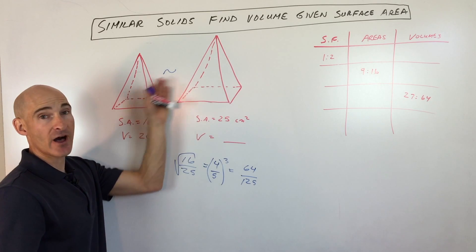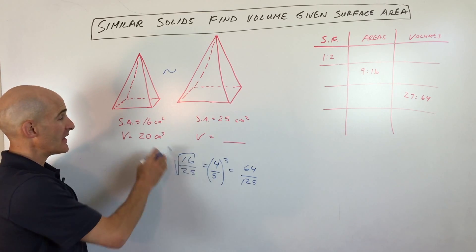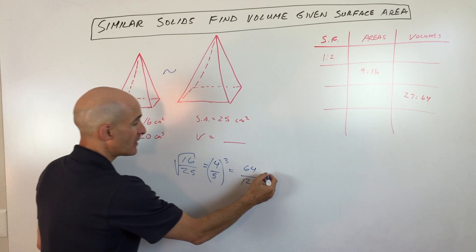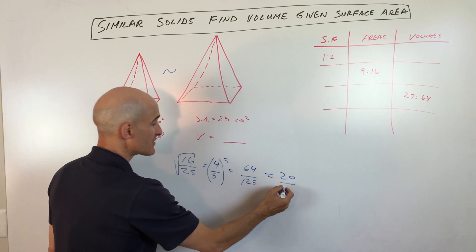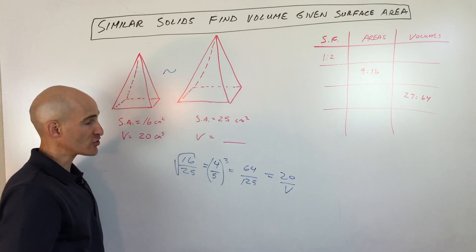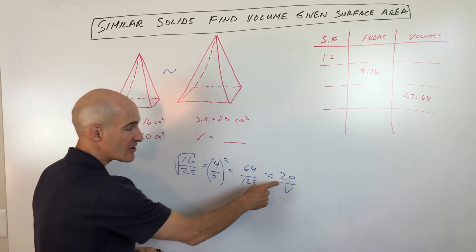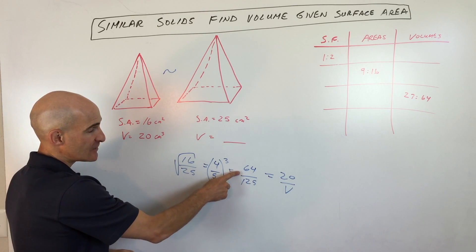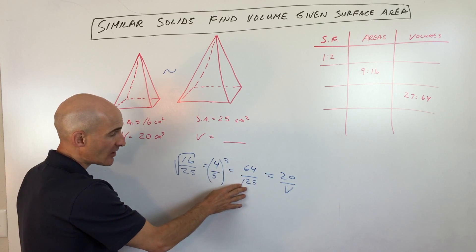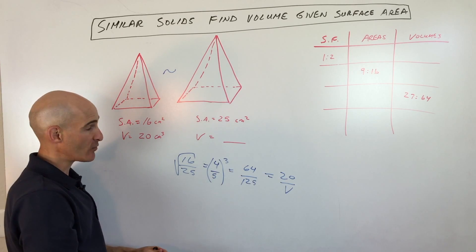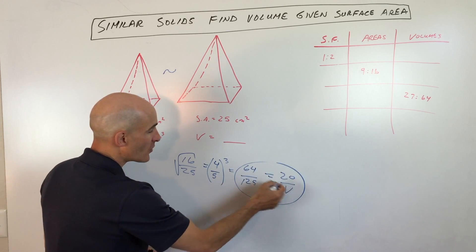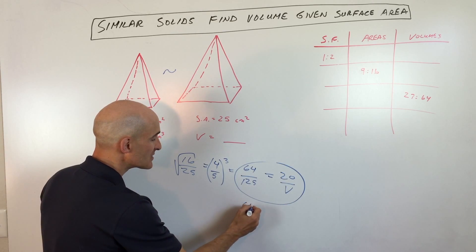Now, if I want to find the ratio of the volumes, remember volume is three-dimensional — length, width, height. So we have to take the scale factor, which is the ratio of the one-dimensional parts of the figures, and cube that scale factor to get the ratio of the three-dimensional component — the volume. So if we take four-fifths and cube it, we get 64 over 125.